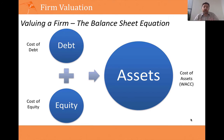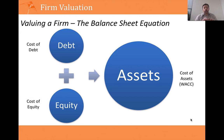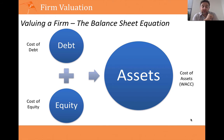If we start off with the balance sheet equation — something that every accounting student gets — it's effectively the debt of a company plus the equity of a company is equal to the value of its assets. The assets are what is used in the firm, and how the operations the company runs creates value. Those assets are funded either by debt or by equity. In previous videos I've shown you how to value debt and equity, and so this video is all about the assets.